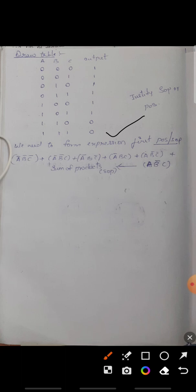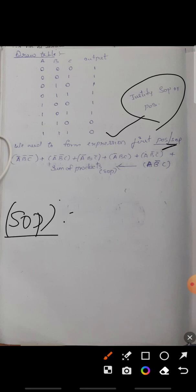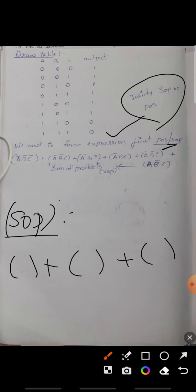We have drawn the same table as given in the question paper. The first step is to form the expression. The question has a concept of justifying SOP or POS — SOP means Sum of Products and POS means Product of Sums. So first we will understand what SOP means. In SOP, the sum terms are in brackets and the product is between them.